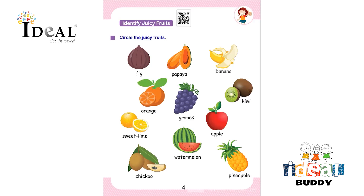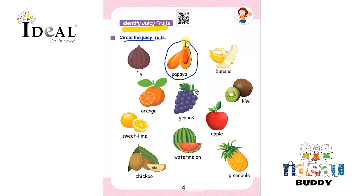Hello everyone. In this page the child has to identify juicy fruits and circle them. So first is fig — fig is not a juicy fruit. After that it is papaya — papaya is a juicy fruit. Next is banana — banana is not a juicy fruit.